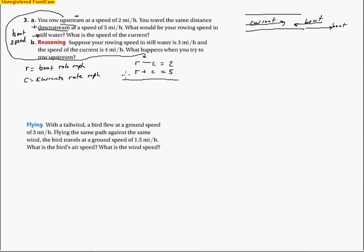So when we add these together, the c's cancel out. I'm left with 2r equals 7. So it looks like r is 3 and a half when I do that division of 2. So that's miles per hour.